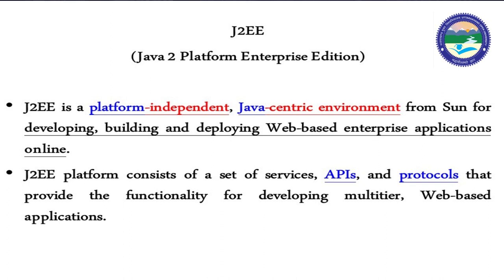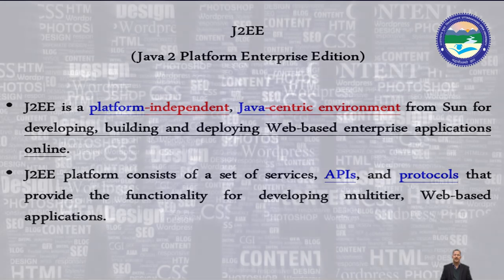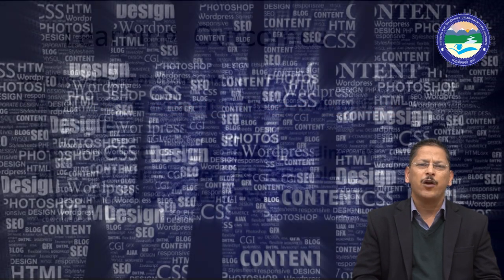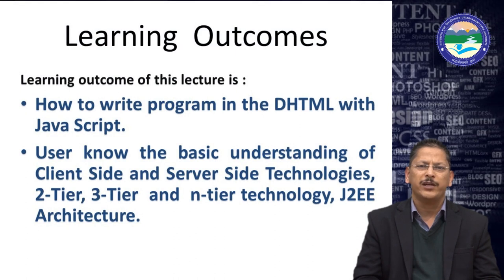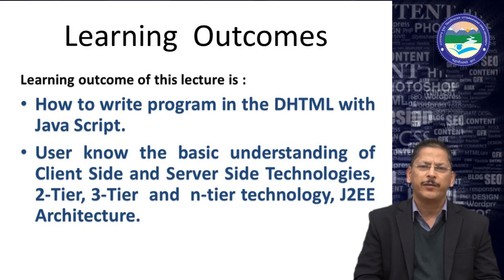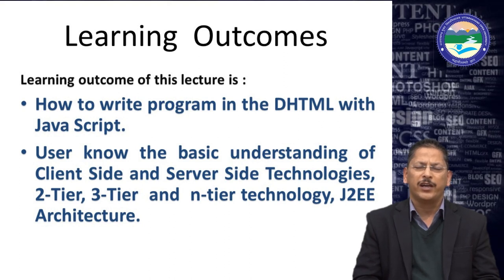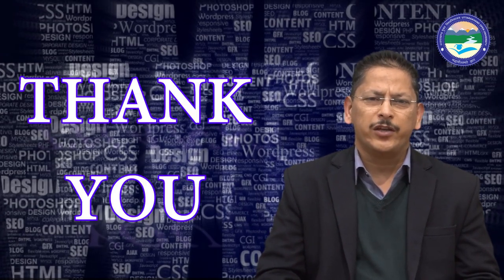The learning outcomes of this lecture are: how to write a program in DHTML with JavaScript, basic understanding of client-side and server-side technologies, two-tier, three-tier, and N-tier technology, and J2EE architecture. Thank you very much. In the next lecture, we will study HTML programs in detail — how to write HTML programs. Thank you, learners.